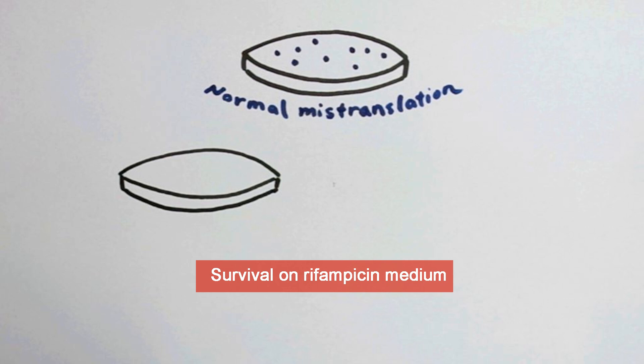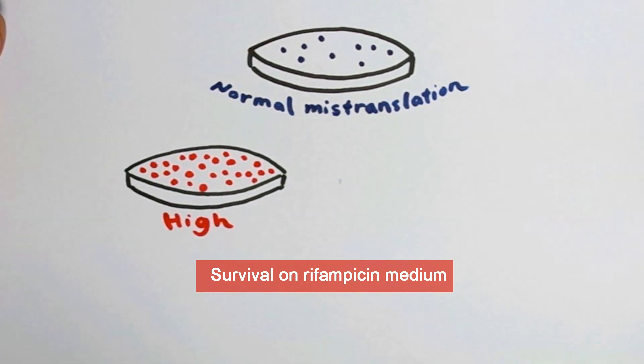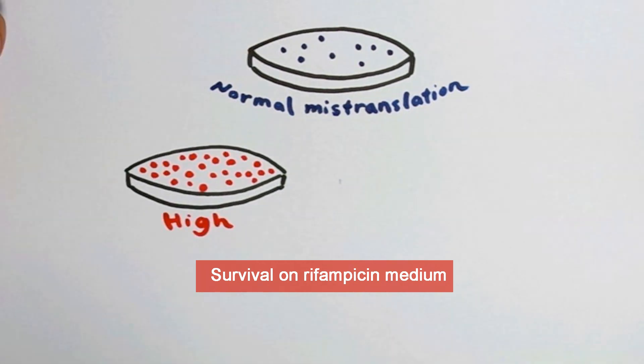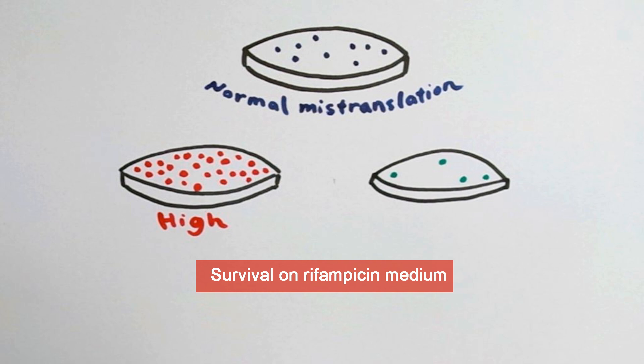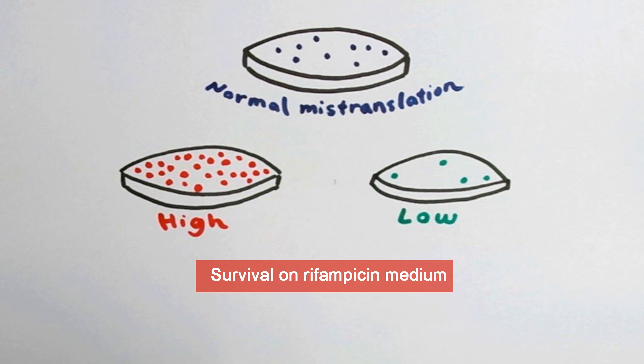Mycobacteria that have high mistranslation rates are better at surviving against the antibiotic rifampicin, which targets RNA polymerase, and if we decrease mistranslation by making high-fidelity ribosomal mutants, these strains are killed more quickly by rifampicin, suggesting that mistranslation is both necessary and sufficient for tolerance to rifampicin.